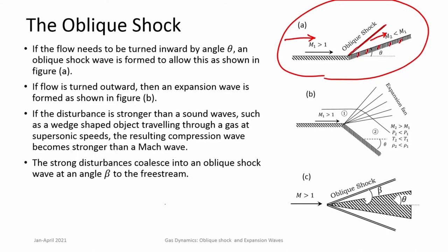That is what happens across an oblique shock — it is a compression wave. Pressure, temperature, and density increase; Mach number decreases across the oblique shock. But unlike a normal shock, in an oblique shock it is possible to have Mach numbers downstream of the shock greater than 1. Flow before the shock is greater than 1, and flow after the shock can continue to be greater than 1. This is a possibility in oblique shocks.